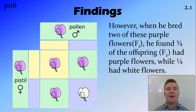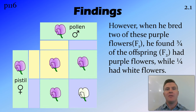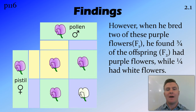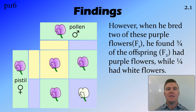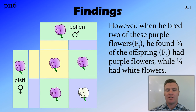What he then found is that when he took two of these F1 generation purple flowers and bred them together, he found that he had three quarters purple flower while he only had one quarter white flower. This was interesting because neither of the parents were white, but some of the offspring were still coming out as white in this next generation, which we call the F2 generation.